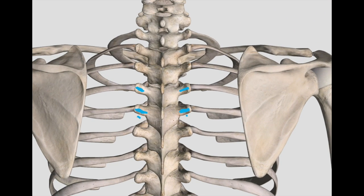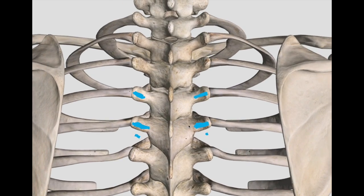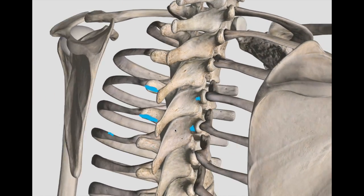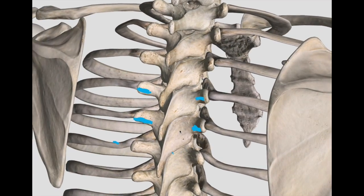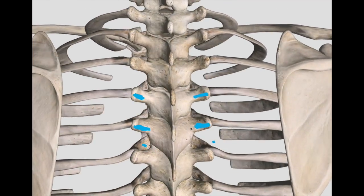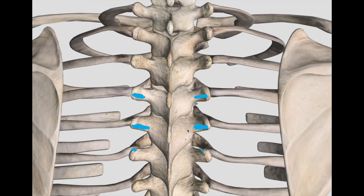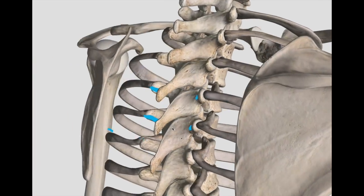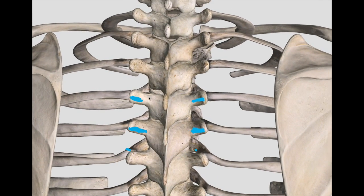If you're in the thoracic region and you're looking for somatic dysfunctions, what you want to do is palpate the spinous processes, which I've highlighted on the skeleton. This is the coolest app - I think everybody should get this app. I've highlighted these transverse processes in the thoracic region, and this is where you want to be palpating for somatic dysfunction. What you're really looking for is rotation.